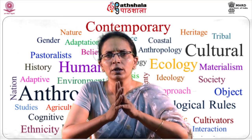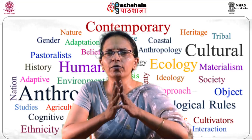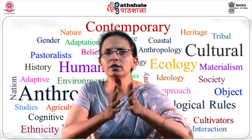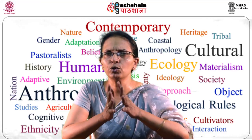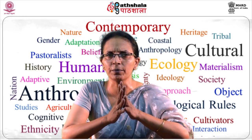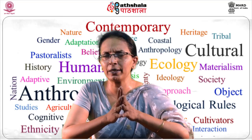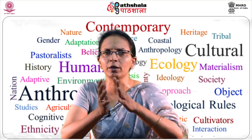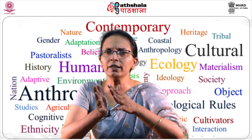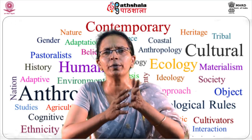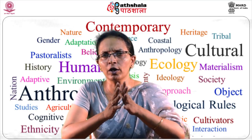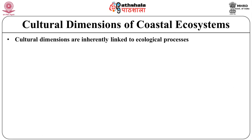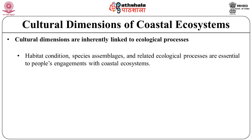Cultural dimensions of ecosystems influence and are influenced by governance and action. Implicit in collaborative conservation is the recognition that resource management and governance institutions shape and are shaped by the cultural dimension of ecosystems. Mechanisms such as harvest controls — for example, timing, location, species, quantities and techniques — and formal and customary rules of access to resources and decision-making processes constitute governance. Marine governance is at once a set of institutional, political and economic structures, and also tied to the underlying philosophies, social norms, relationships and knowledge systems embedded in those structures at all scales. Cultural dimensions are inherently linked to ecological processes; habitat condition, species assemblage and related ecological processes are essential to people's engagement with the coastal ecosystem.